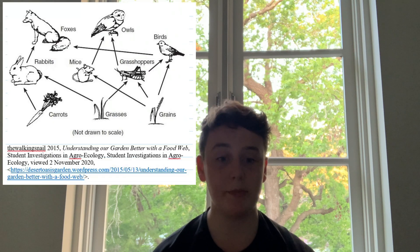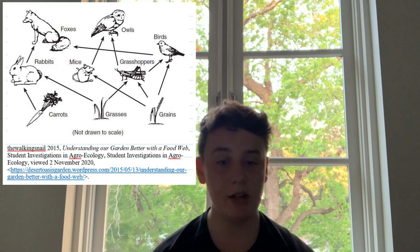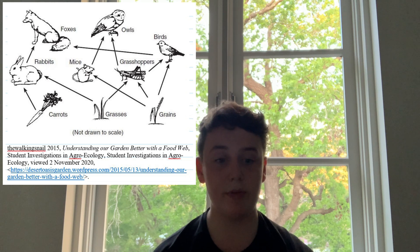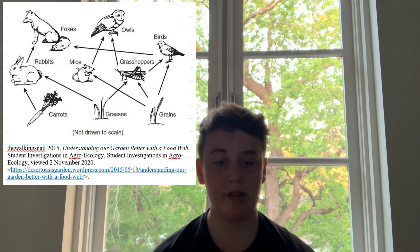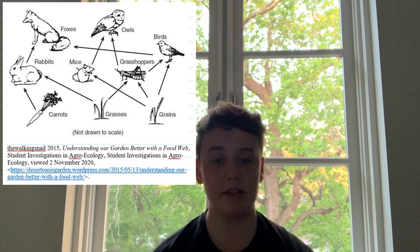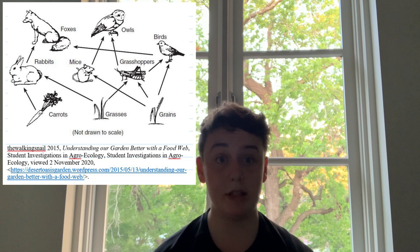The next topic is food webs, which has two simple parts. Firstly, you need to be able to extract information from a food web. From the example food web, we can see that foxes and owls are secondary consumers at the top of this food chain. Rabbits, mice, grasshoppers and birds are primary consumers — they consume the producers but are prey for secondary consumers. Carrots, grasses and grains are producers, providing energy to the primary consumers.